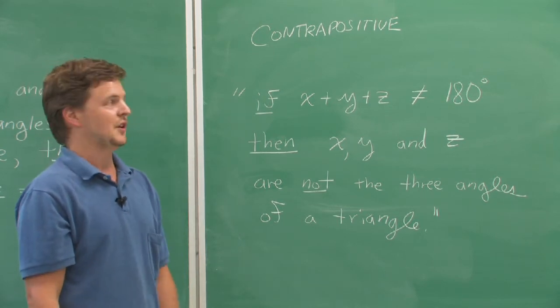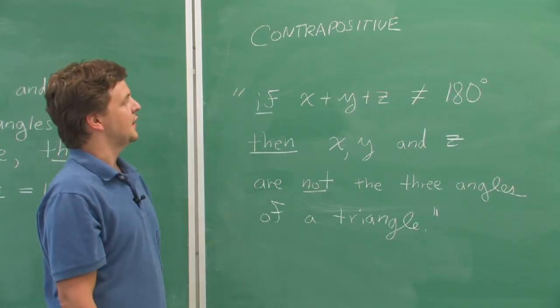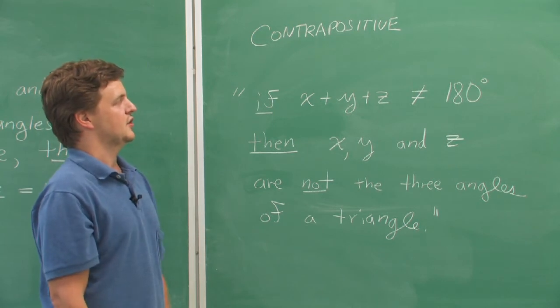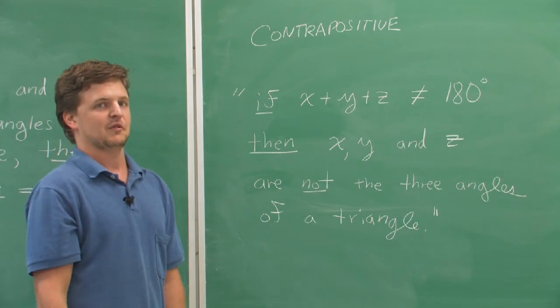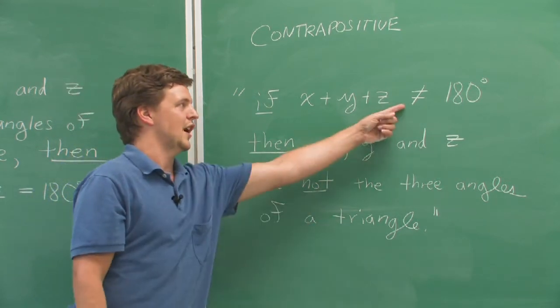Here's what happens to our original statement. I say if x plus y plus z does not equal 180 degrees. I've started with the finish from the original and I've also negated it. I made it not equal.